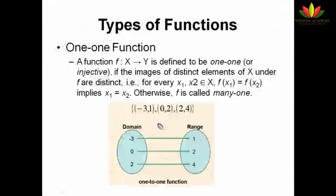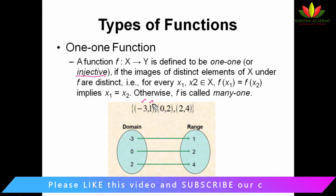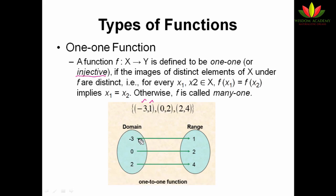Hi guys, welcome to Wisdom Academy YouTube channel. Today we are going to see types of functions. The first and most important function is one-to-one function, also known as injective function. For one image, only one pre-image will be there — unique image and unique pre-image. If I draw an arrow diagram, I will get only one line for one element, so no range element is allocated to any two domain elements.